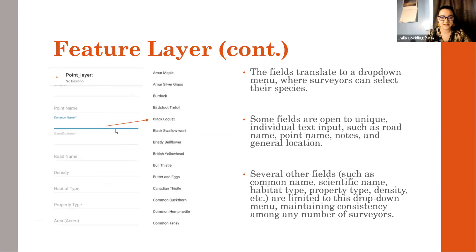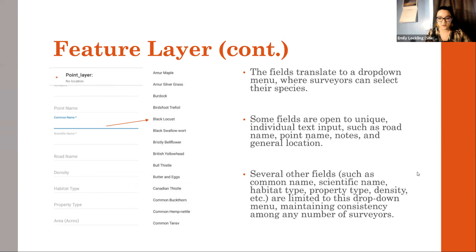The way it pops up in the app is as a full drop-down menu. Some fields I chose to leave as unique individual text input — things like notes, general location, roads, and point names. Several fields I chose as drop-down menus for consistency: common name, scientific name, habitat, property type, and density. Not all fields are required, but those marked with an asterisk are required — even if the answer is just 'unknown.'